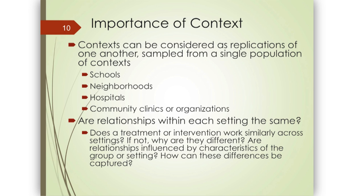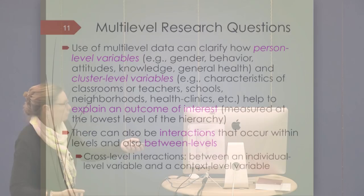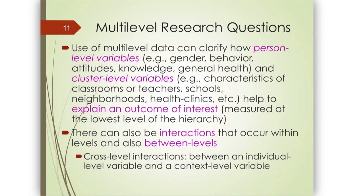We'd like to know if patient outcomes are the same in different hospitals, and if not, what is it about the hospitals that might inform a better understanding of why. Same with schools — we might want to know why student achievement differs across a collection of schools and whether school-level variables can help explain those differences. Multi-level data helps us clarify how person variables like gender or prior knowledge, and cluster-level variables like school or teacher characteristics, explain outcomes measured at the lower level.